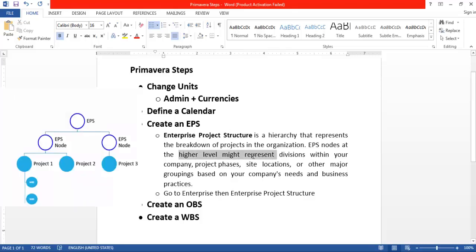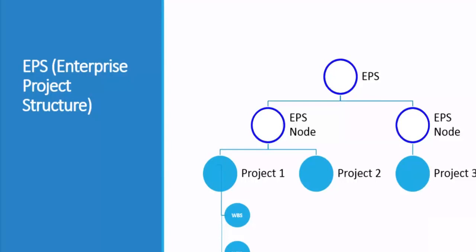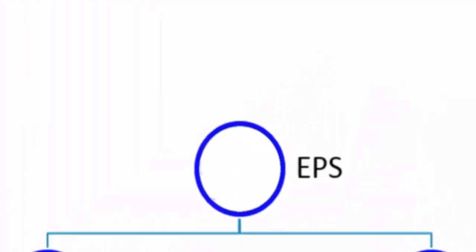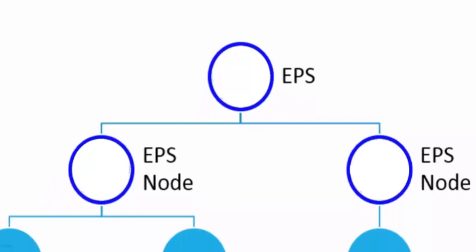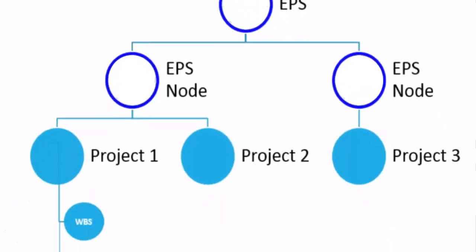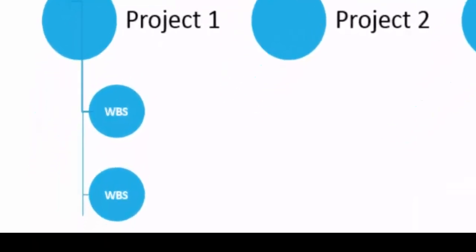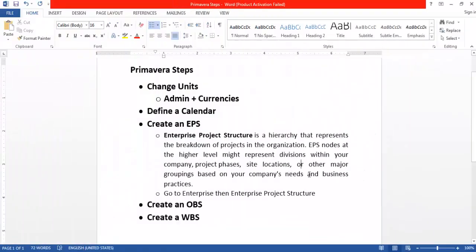EPS nodes at the higher levels might represent divisions within your company — for example, your company at the top level and its divisions at lower levels. Or it may represent project phases, where the total project is at the top and the different phases are at lower levels. Similarly, it can represent site locations or other major groupings based on company needs and business practices.